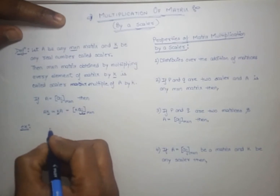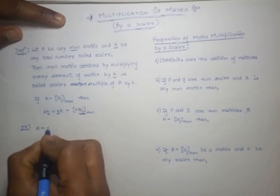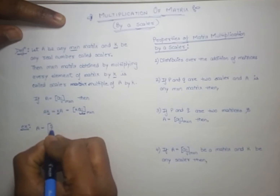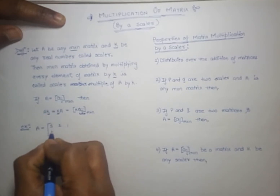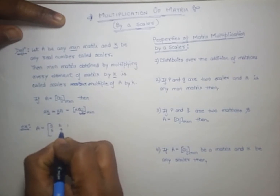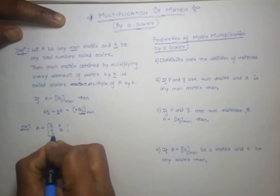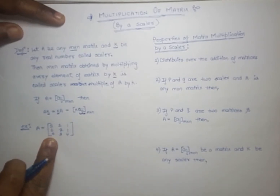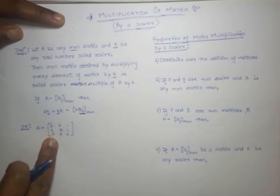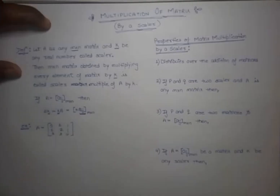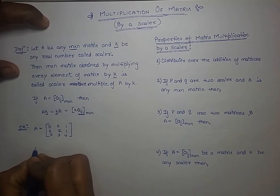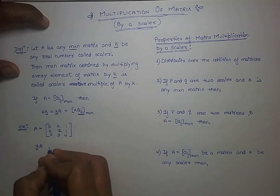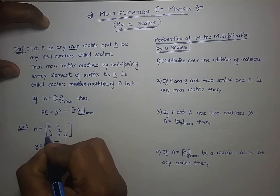For example, let A be the matrix: 5, 2, 1 / 6, 2, 1 / 3, 3, 4. If we want to find 3 times A, where 3 is a scalar quantity, what we have to do is multiply 3 with every element of the matrix.